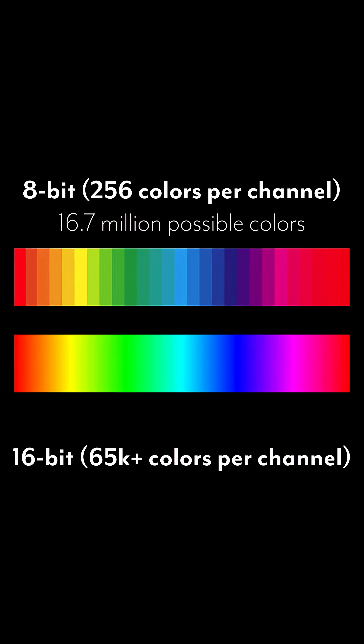16-bit, on the other hand, allows for over 65,000 shades per color channel, and that's over 281 trillion different possible colors that could be in your image.